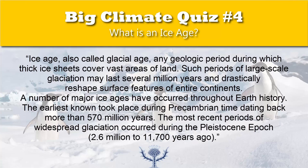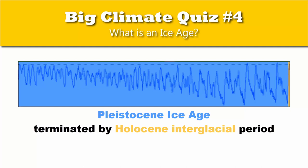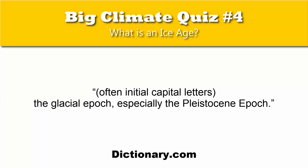Encyclopedia Britannica says: "Ice Age, also called glacial age, any geologic period during which thick ice sheets cover vast areas of land. Such periods of large-scale glaciation may last several million years and drastically reshape surface features of entire continents. A number of major ice ages have occurred throughout Earth's history. The earliest known took place during pre-Cambrian time, dating back more than 570 million years. The most recent period of widespread glaciation occurred during the Pleistocene epoch, 2.6 million to 11,700 years ago." This definition portrays the entire Pleistocene as an ice age which ended 11,700 years ago.